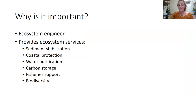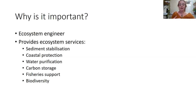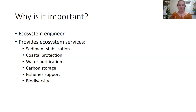Seagrass is something called an ecosystem engineer, which means it's a species that significantly modifies a habitat. The presence of just one single species of seagrass can completely transform bare sediment into a structurally complex habitat which could be home to lots of different species. Because of this, it can produce lots of ecosystem services — natural processes or components of an ecosystem that directly or indirectly benefit people.